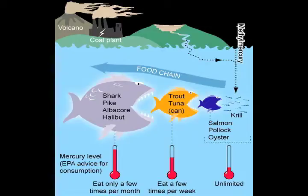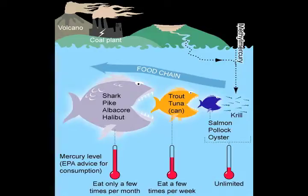Shrimp, canned light tuna, salmon, pollock, and catfish are generally low in mercury. Albacore, or white tuna, is higher in mercury and should be eaten less often. Shark, swordfish, king mackerel, and other predatory fish contain the highest levels of mercury.